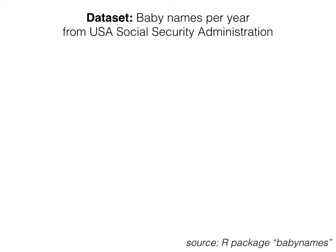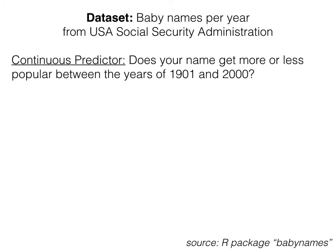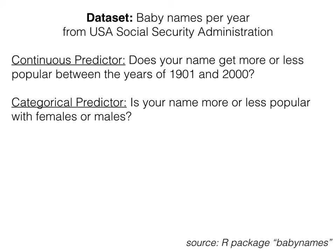We'll be asking two questions today with this lab. One with a continuous predictor and one with a categorical predictor. First, does your personal name get more or less popular between the years 1901 and 2000? And second, is your name more or less popular with females or males?